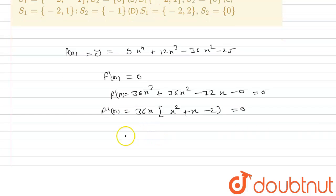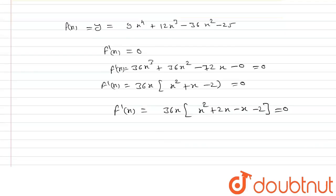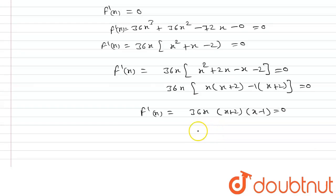Taking 36x common, we get x² + x - 2 = 0. Factorizing: 36x(x + 2)(x - 1) = 0. So we get three critical points: x = 0, x = -2, and x = 1.